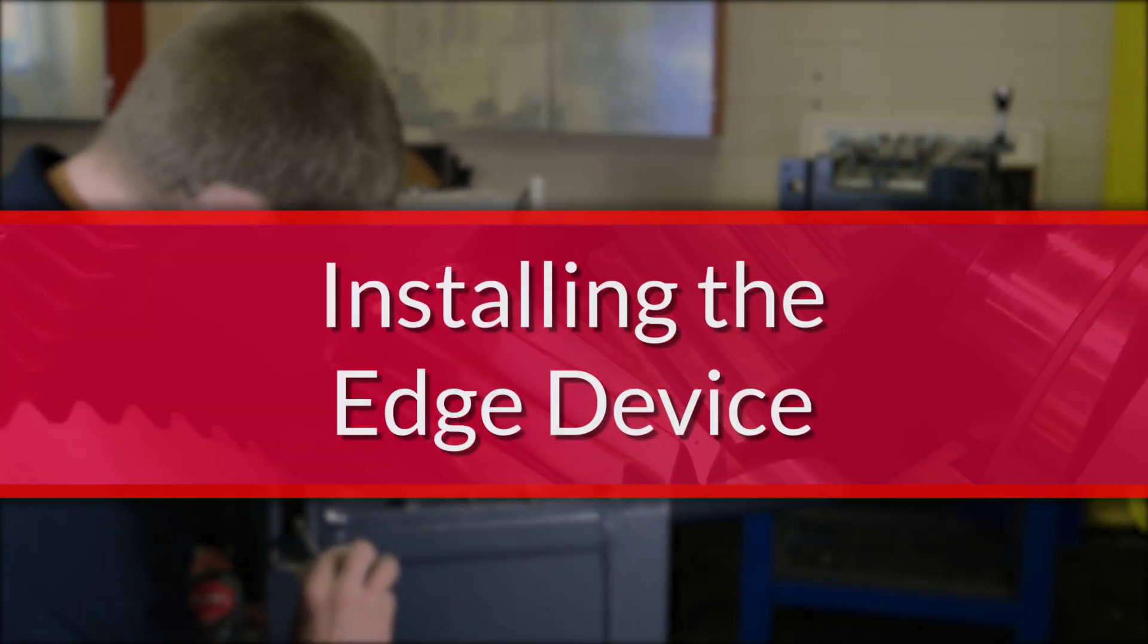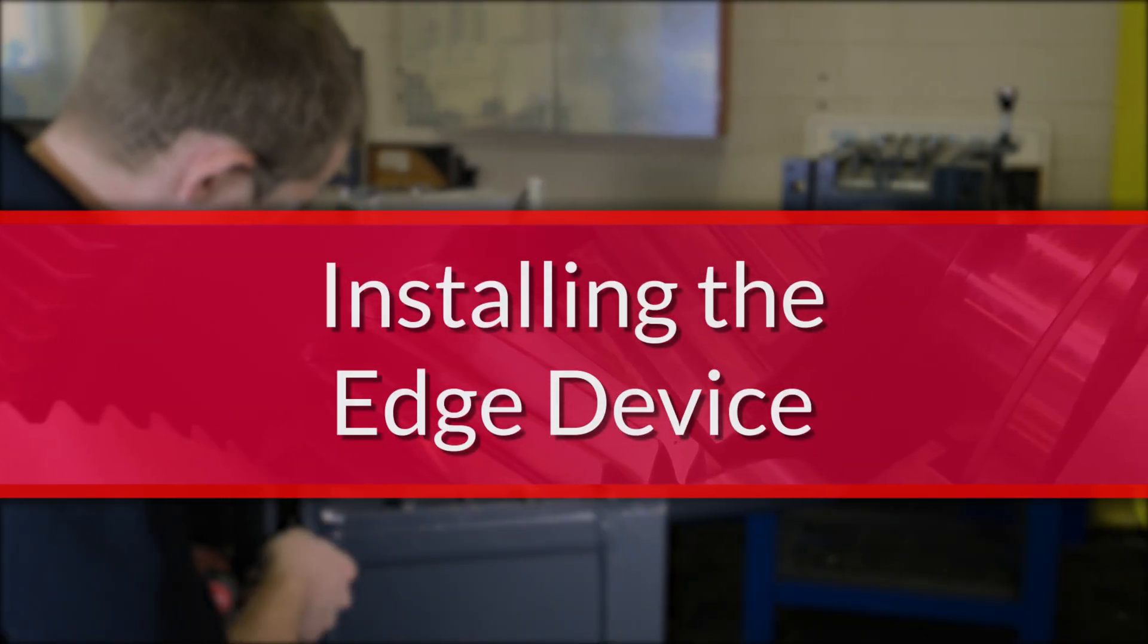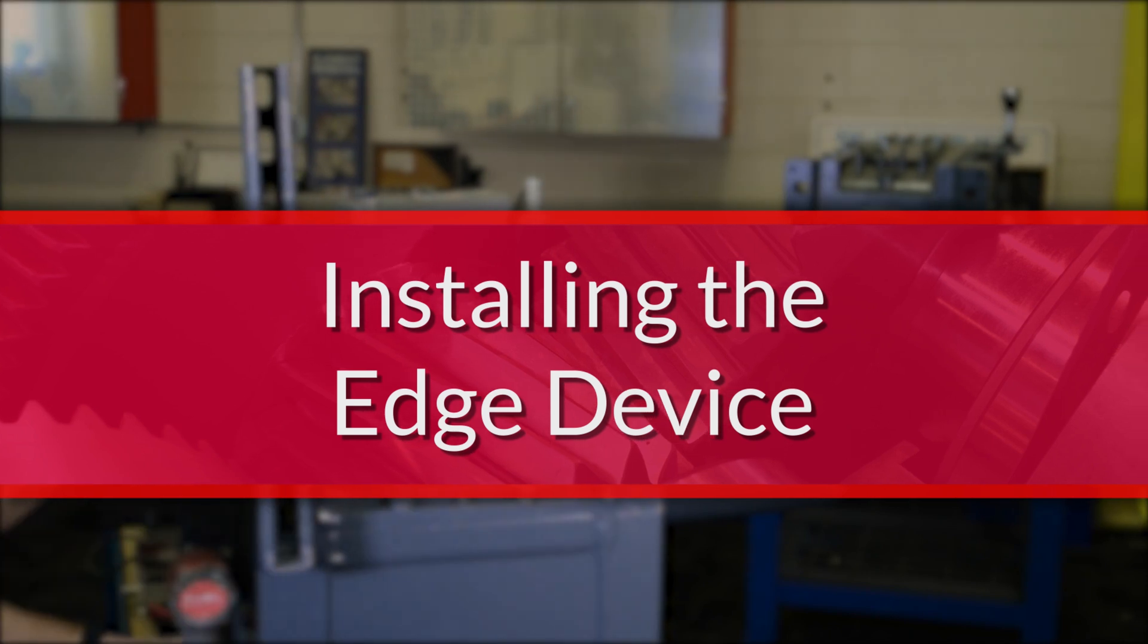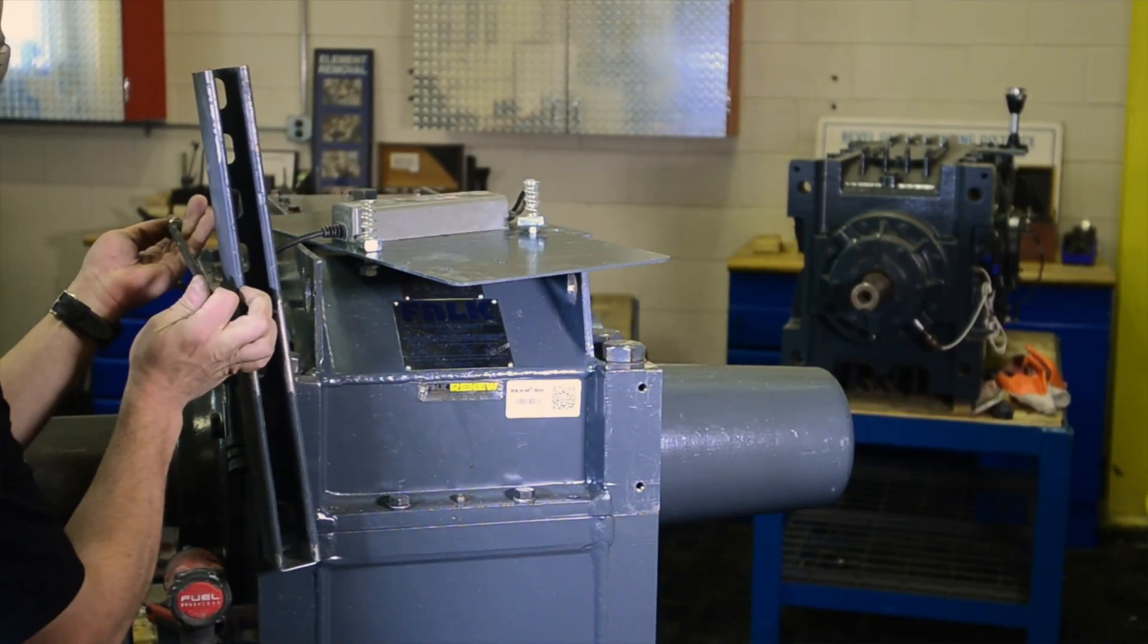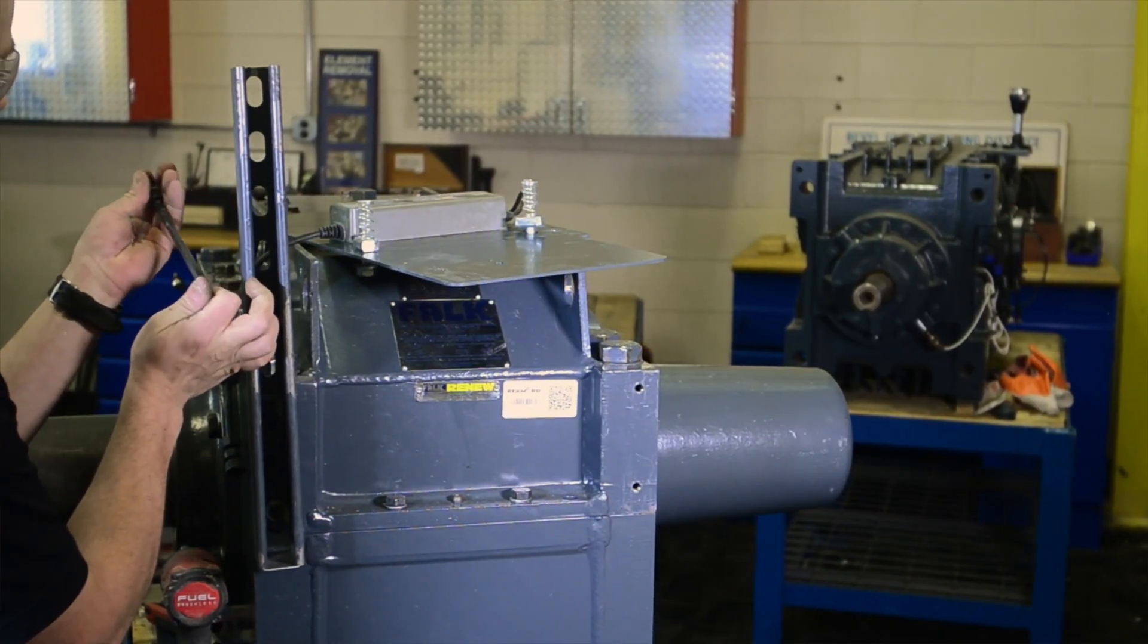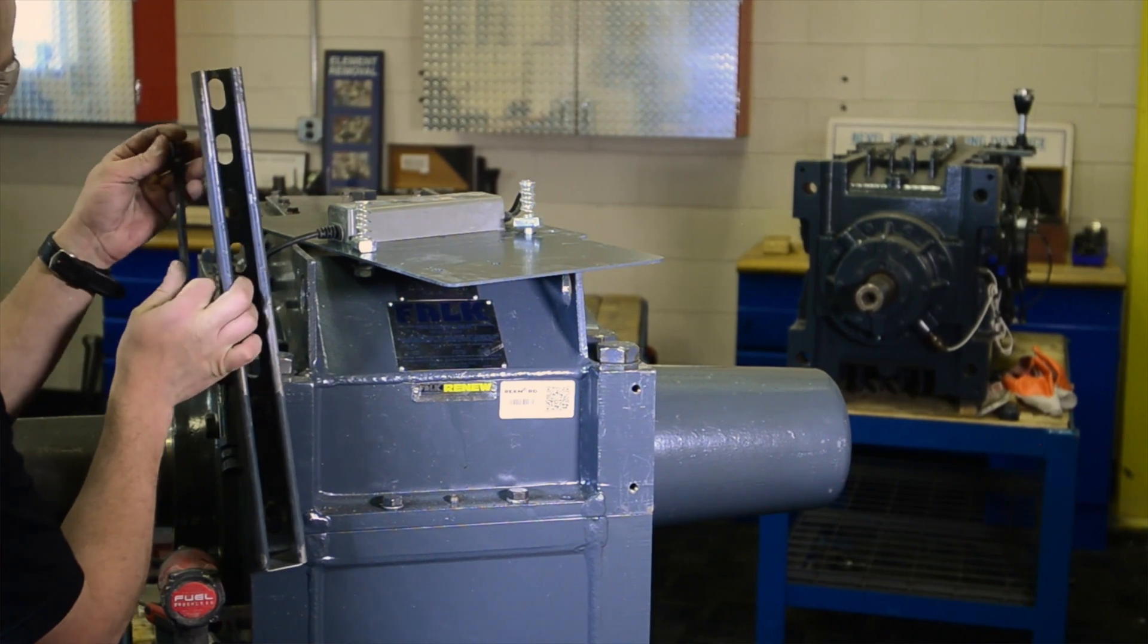Unistrut will be used to secure the edge device to the gear drive. It is generally easiest to install the edge device at the low speed end on the same side that the vibration sensor is located.